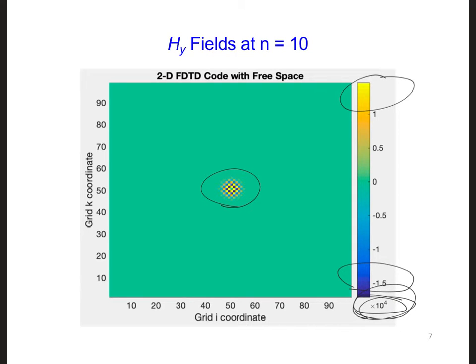So this means from one grid cell to the next, the HY fields are rapidly alternating between positive and negative numbers. So if I were to plot the HYs along a straight line away from the source, I would see something like this.